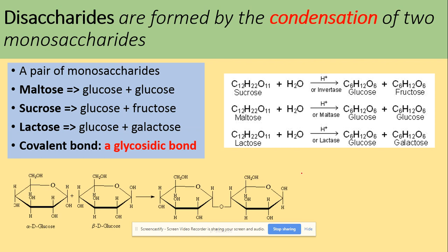So disaccharides are formed by a condensation reaction. A condensation reaction is the joining of two sugars together by removal of water to get the disaccharide. Maltose is made of glucose and glucose minus a water molecule. Sucrose is glucose and fructose minus water, and lactose is glucose and galactose minus water. The bond made between the monosaccharides is called a glycosidic bond.